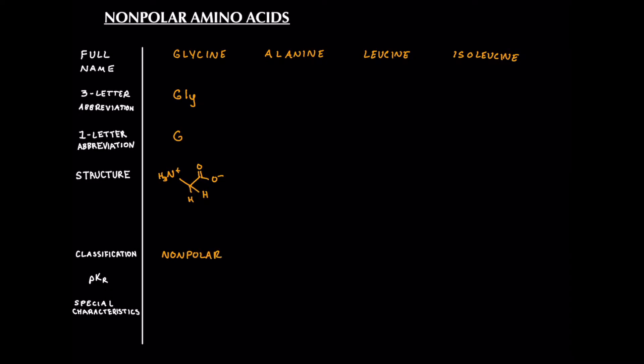Its PKR is not applicable because there is no acidic hydrogen. As far as special characteristics, they're not going to be super applicable for the MCAT, other than the fact that the C-alpha carbon is achiral. Every other amino acid will have the L-stereochemistry, but glycine will be achiral because it is only attached to three different things instead of four.